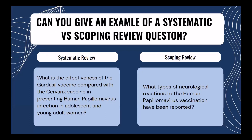Can you give an example of a systematic review versus a scoping review question? A systematic review question might be: 'What is the effectiveness of Gardasil vaccine compared with cervarix in preventing human papillomavirus infection in adolescents and young women?' — it fits the PICO framework and is comparative and clinical. A scoping review question might be: 'What types of neurological reactions to the HPV vaccination have been reported?' — much broader, mapping the literature thematically rather than synthesizing data statistically.